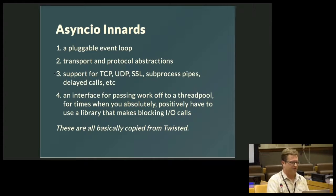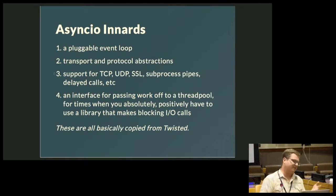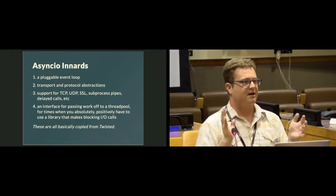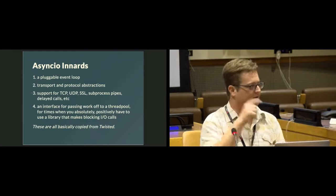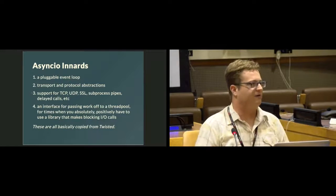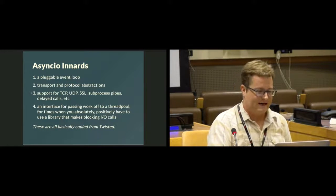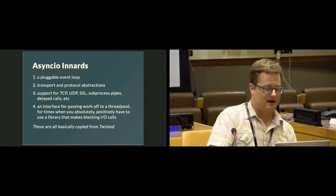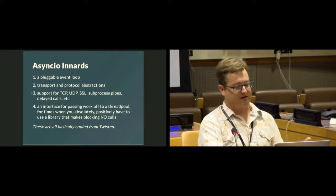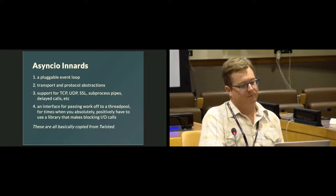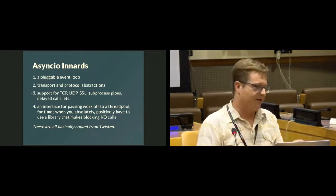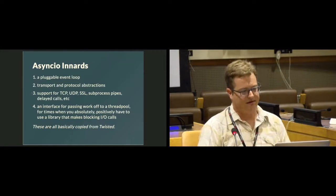In the asyncIO internals, we've got a pluggable event loop, just like Twisted with the reactor. We have transport and protocol abstractions, which were pretty much just taken straight from Twisted. The actual definition for those methods is almost exactly the same, except Twisted used camelCase and asyncIO uses underscores between words — that's pretty much the only difference. AsyncIO has support for TCP, UDP, and SSL, as well as subprocess pipes and delayed calls, but does not include actual protocol implementations like Twisted with all the SSH, SMTP, and all the rest.